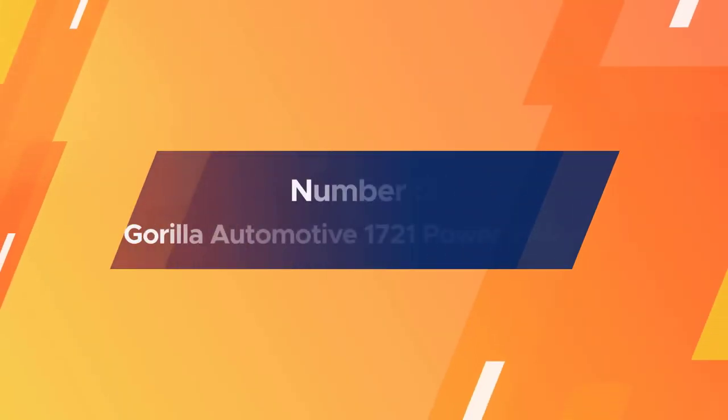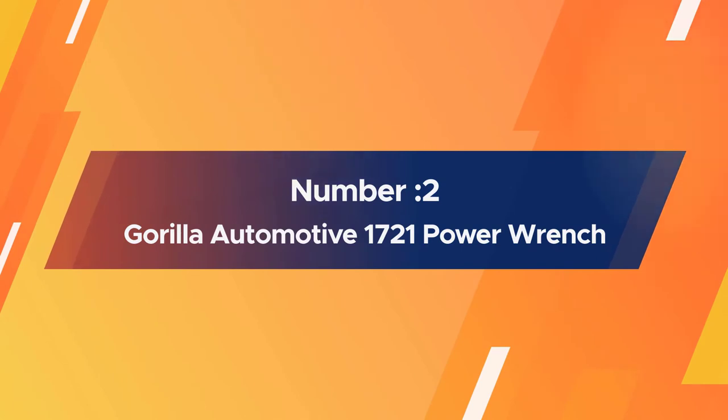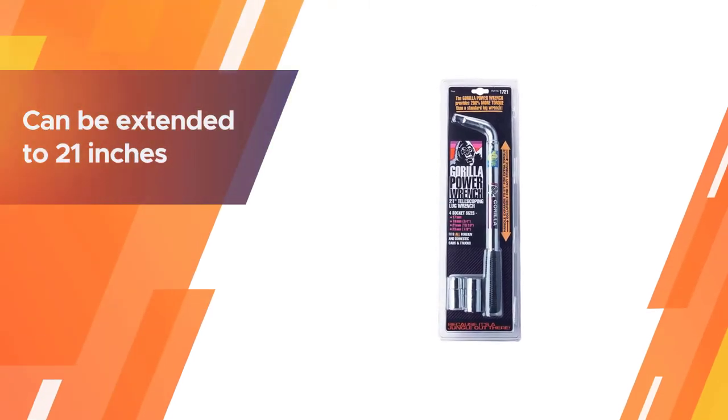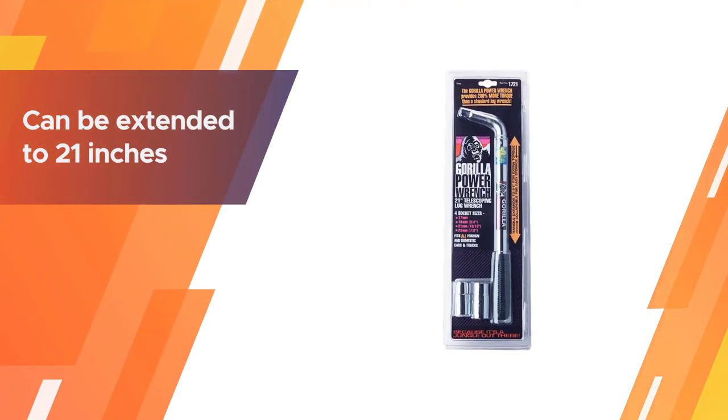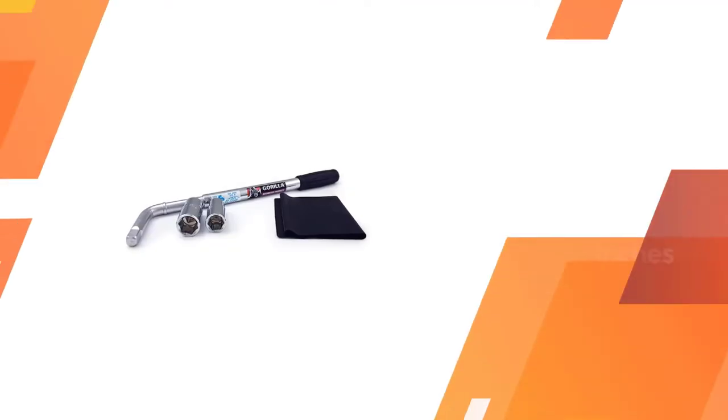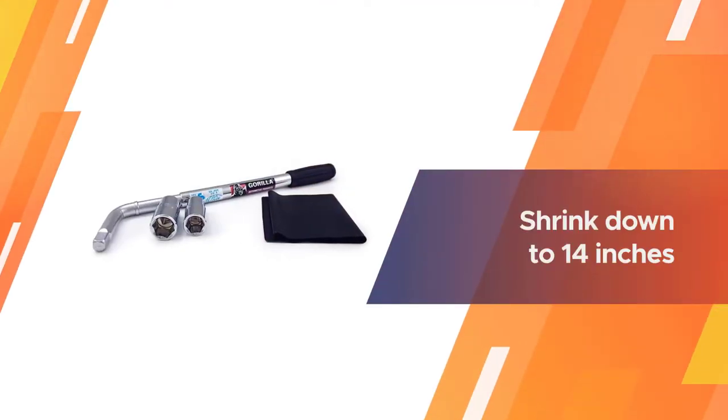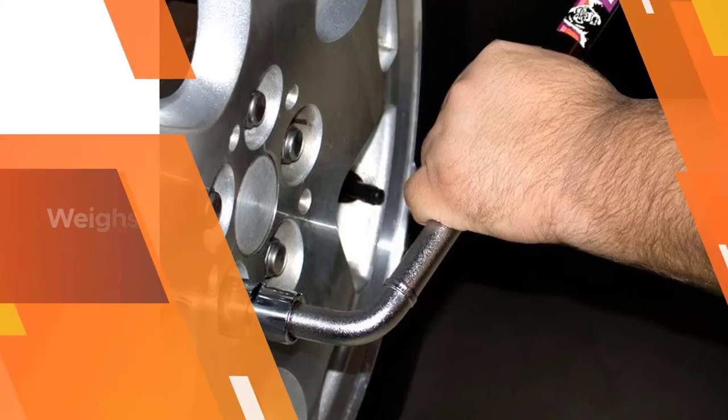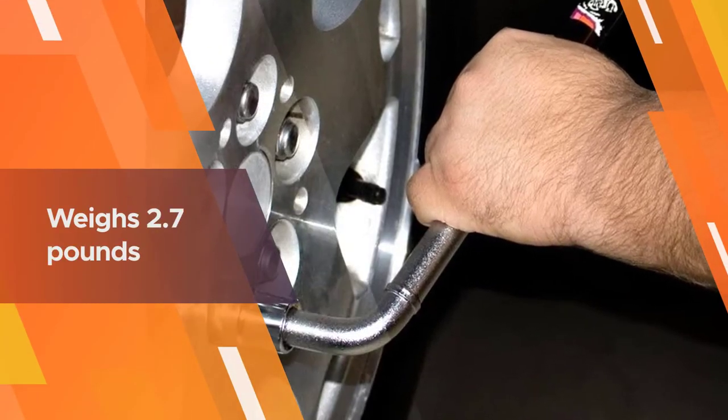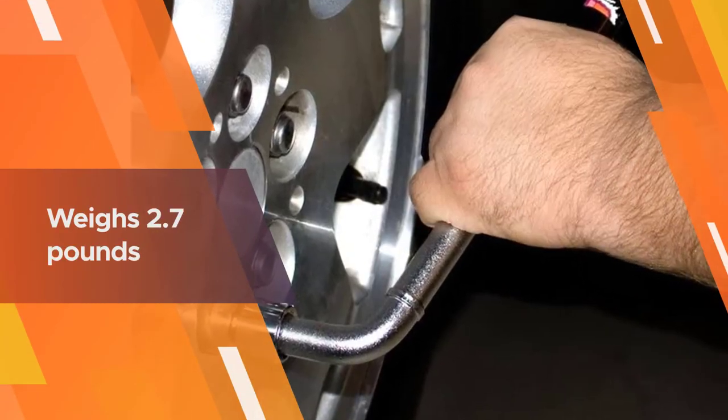Number two: Gorilla Automotive 1721 Telescoping Power Wrench. This Gorilla Automotive lug wrench is a telescoping type which can be extended to 21 inches for use and shrink down to 14 inches for easy storage. The product also weighs 2.7 pounds, saving users from a bulky heavy toolbox. The tool is made from hardened steel with precision construction.